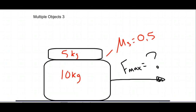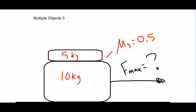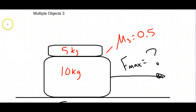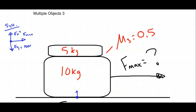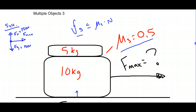On to the last problem — it looks harder but it isn't much more difficult. Drawing free body diagrams for the system: we have F max pulling to the right, a gravitational force of approximately 150 newtons, and a normal force of 150 newtons pushing up on the 10 kilogram object. Using the static friction coefficient, static friction is always less than or equal to mu static times the normal force. So the maximum static friction, Fs max, equals mu_s times the normal force.